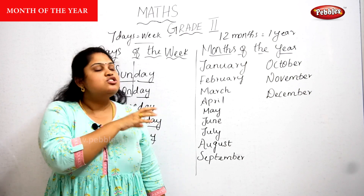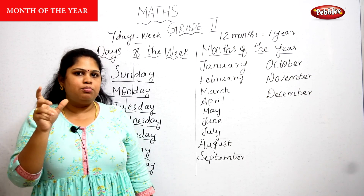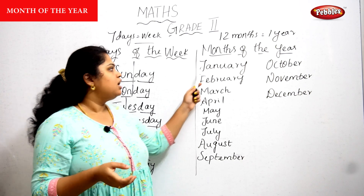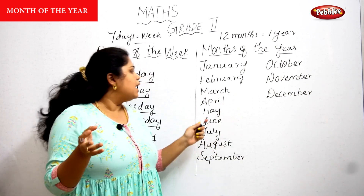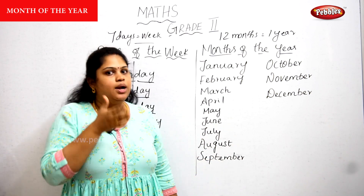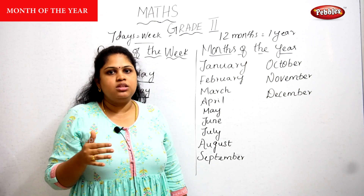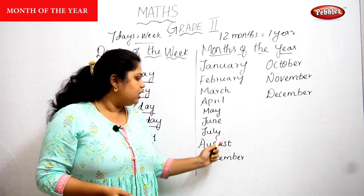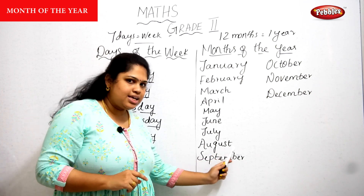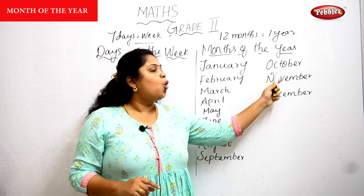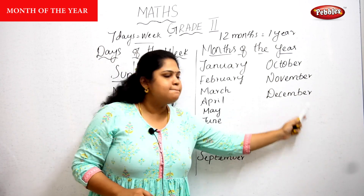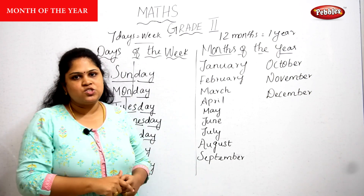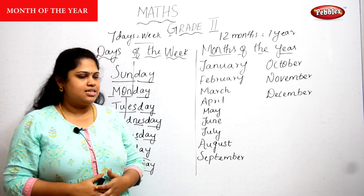When you struggle to learn spellings, it's because your pronunciation is not exact. If you say 'January, February' quickly you won't remember the spelling easily. Be very clear about pronunciation: Jan-u-ary, Feb-ru-ary, March — stretch the R so you know the R is there. March, April, May, June, Ju-ly, Au-gust, Sep-tem-ber, Oc-to-ber, No-vem-ber, De-cem-ber. Read with correct pronunciation and it becomes very easy to remember the spellings.